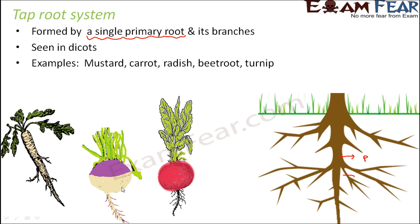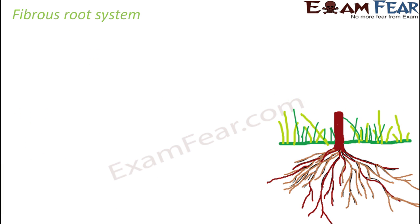In many different plants, roots are modified into many different shapes. So the tap root system is a system where you have one primary root. In the case of carrot or radish it is elongated; in the case of turnip it is spherical; in the case of beetroot it is swollen above and tapering towards the end. From that single primary root you have many branches — this entire structure is the tap root system.